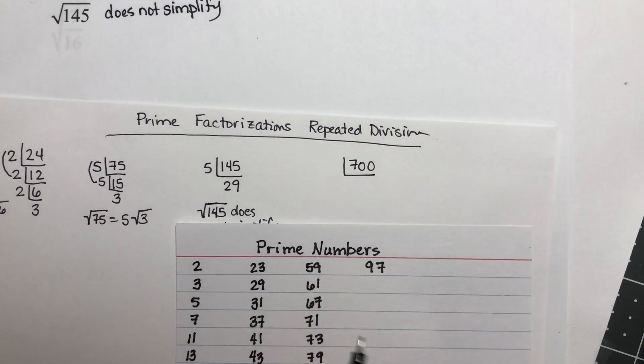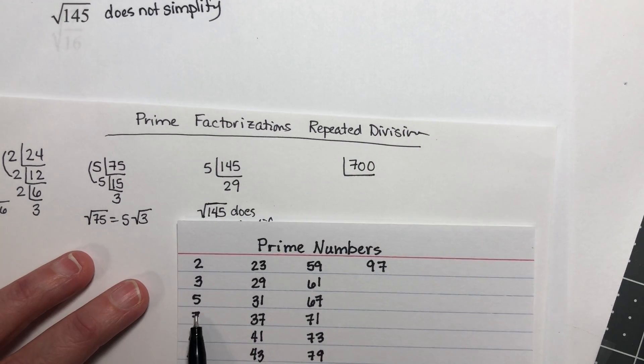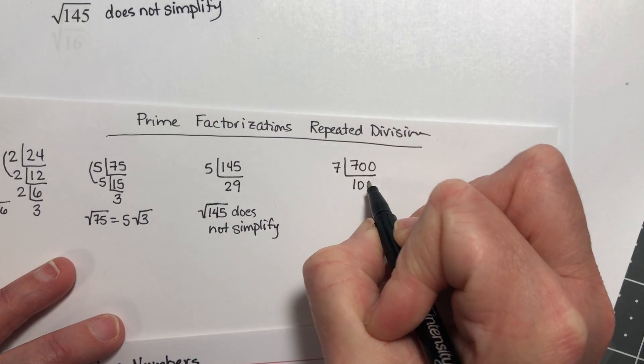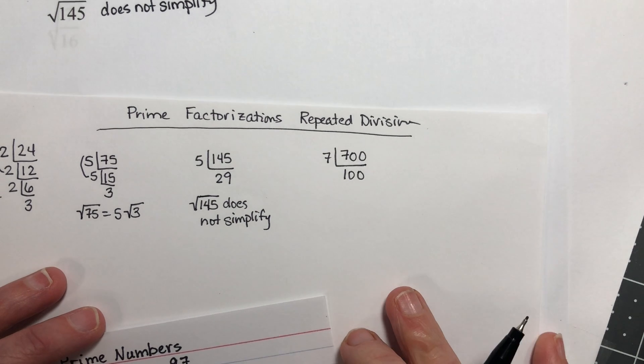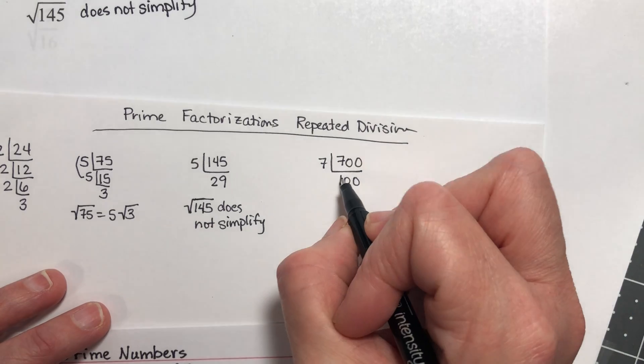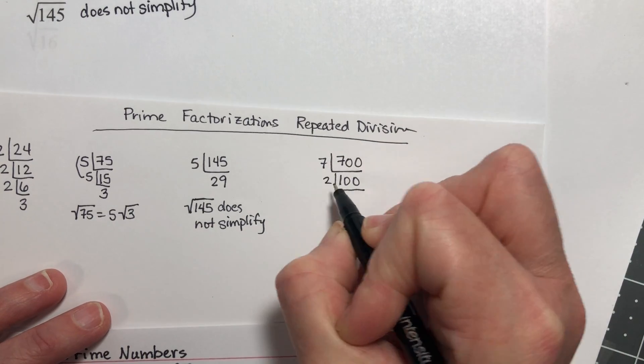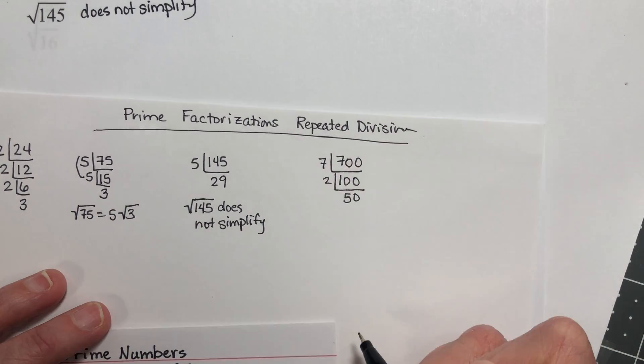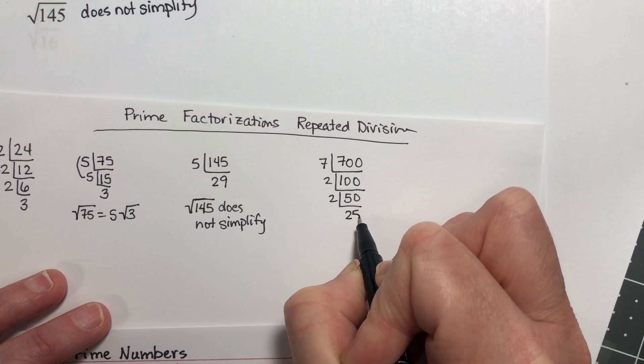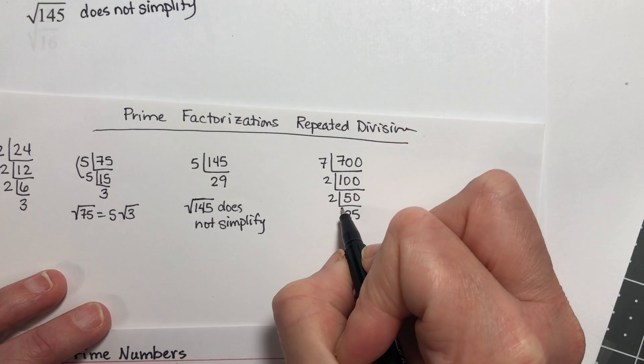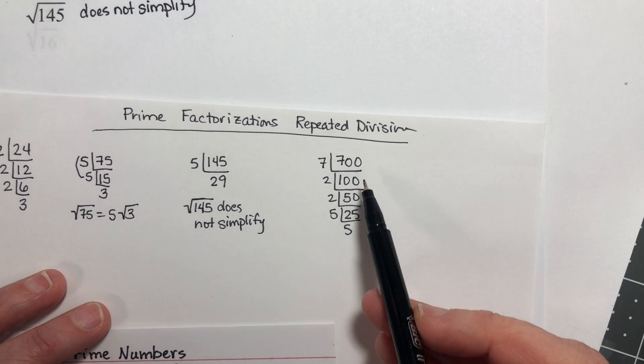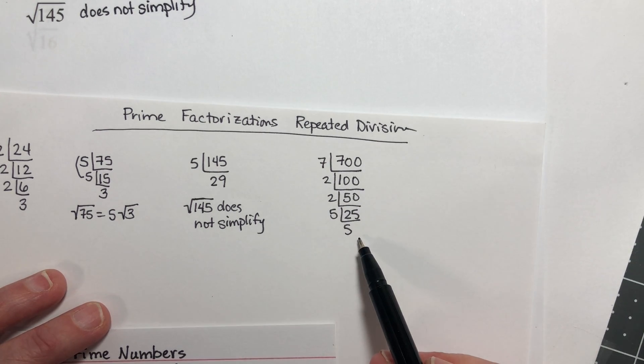The first thing I notice is that it's divisible by 7, and 7 is a prime number. So I'm going to divide by 7 and then get something nice: 100. 100 is an even number, you can divide by 2, and that gives you 50. And then you can divide by 2 again, and that gives you 25. And then that one's divisible by 5 and you get 5. So here is my prime factorization: 7 times 2 times 2 times 5 times 5.